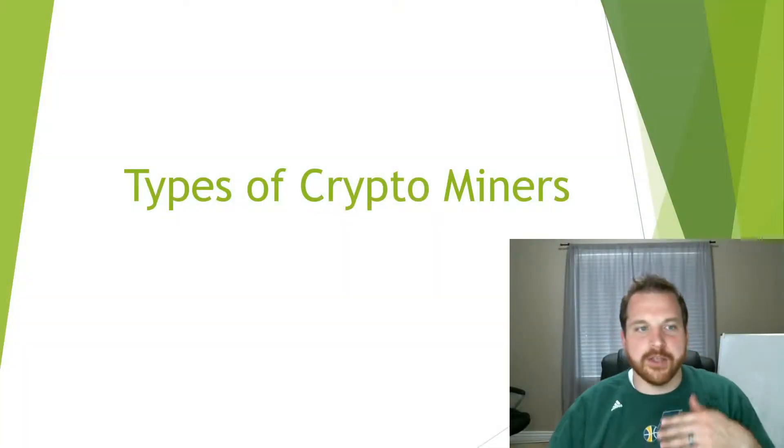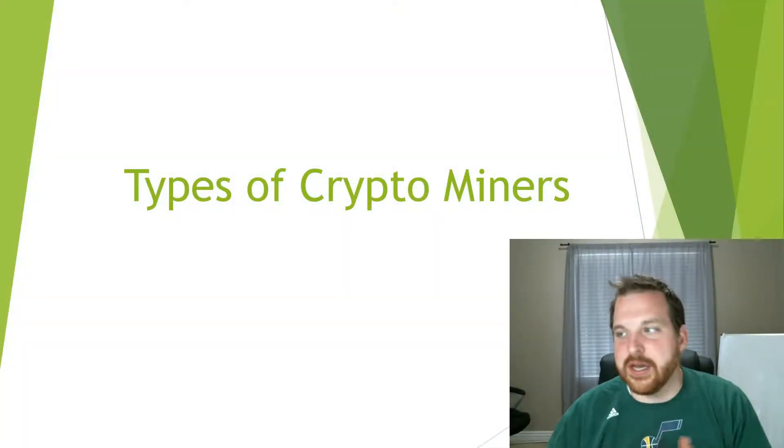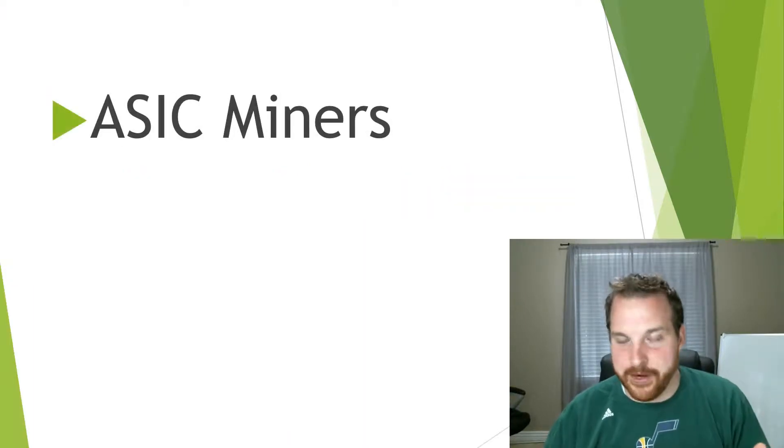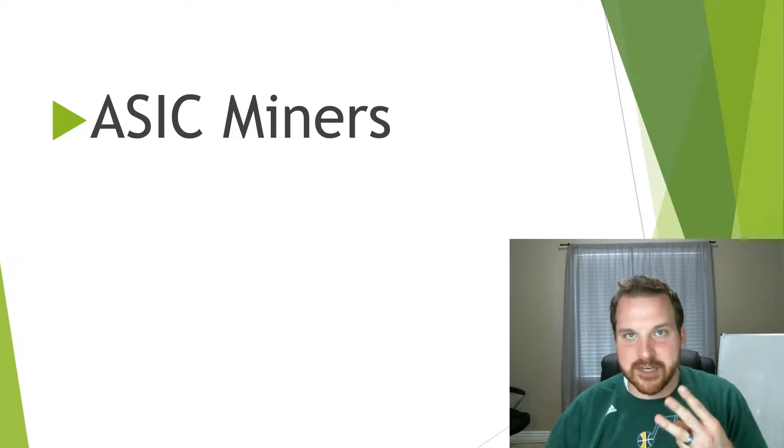Let's start out with the different types of cryptocurrency miners so you can decide what you want to do, how much effort you want to invest, and how much money you want to invest. I'll give you some tips. So we're going to talk about the types of cryptocurrency miners — the first type is an ASIC miner. We're going to cover three different types: ASIC miners, CPU miners, and GPU miners.